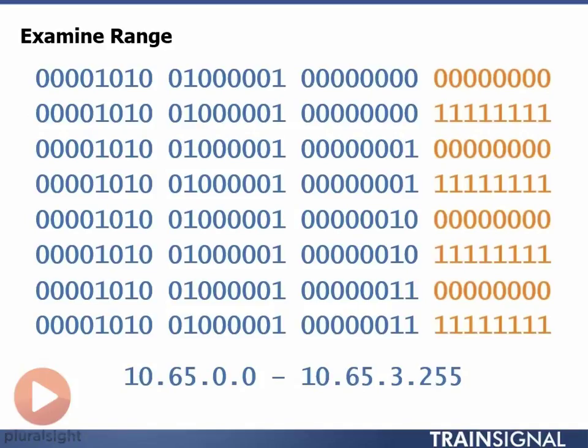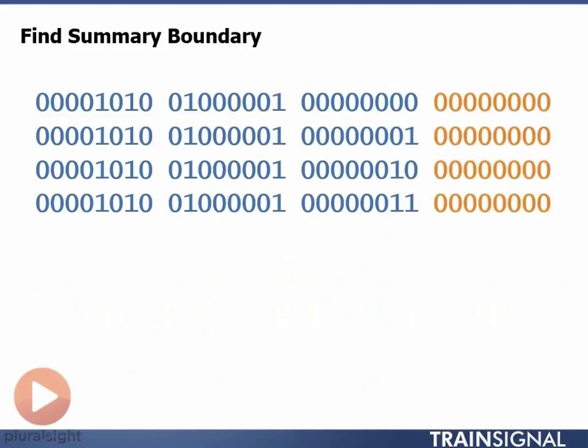So if I can write these addresses in a different way, to set it up so that I have a network address and subnet mask that covers the same range of addresses, I can create a much simpler static route. Here's how we do that. I once again take my four network addresses written in binary,